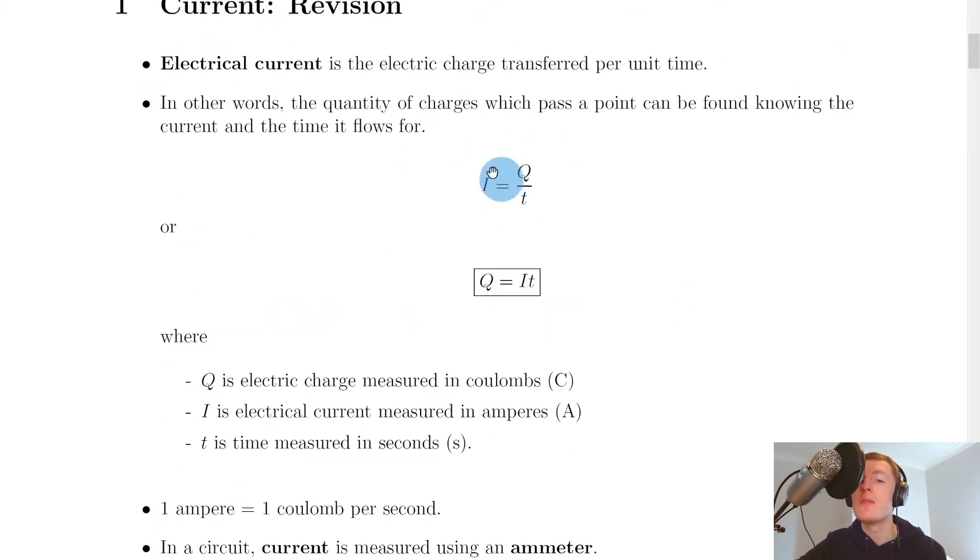So I equals Q over T, if we look at the units of each of these variables, we've got one amp on the left hand side is equal to one coulomb divided by seconds. So one amp is equal to one coulomb per second. And that may be useful for things like multiple choice questions.